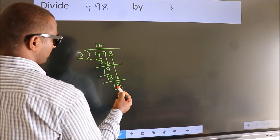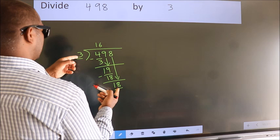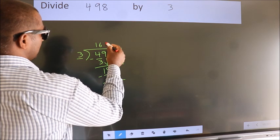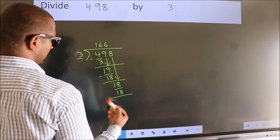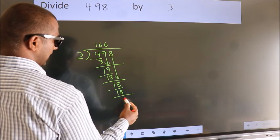So, 18. When do we get 18 in 3 table? 3, 6, 18. Now, we subtract. We get 0.